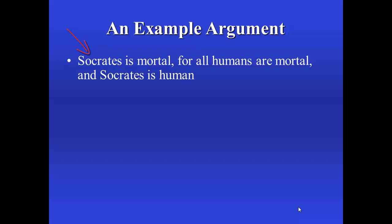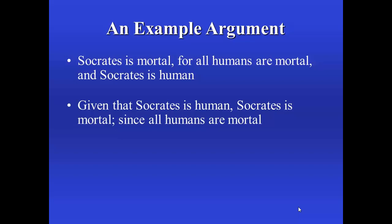One question you might ask yourself now, and which we'll get into a little later, is: is this argument any good? For now, take a look at another argument. Given that Socrates is human, Socrates is mortal, since all humans are mortal. Now the exact same three sentences are used here, but we have slightly different premise indicators. The sentences occur in different order, but we have 'given that' as a premise indicator to indicate that 'Socrates is human' is a premise again, and we have 'since' to indicate that 'all humans are mortal' is a premise again. So that again leaves 'Socrates is mortal' as the conclusion.